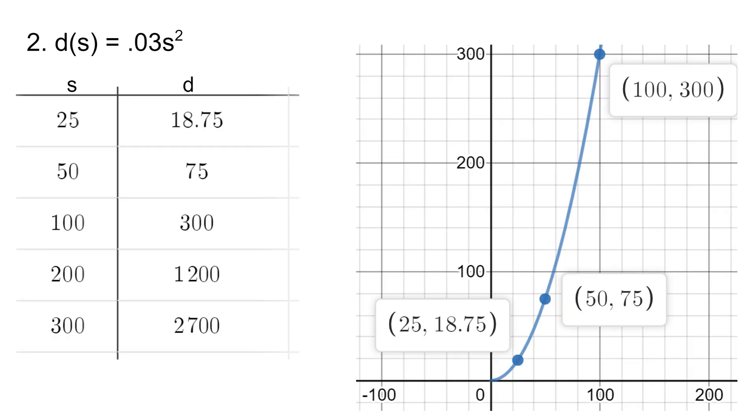So we're given in problem two this function rule for a Ferrari that gives us the stopping distance when we slam the brakes based on the speed of the car. As you can see in my table, if I was driving at a speed of 25 miles per hour, it would take me 18.75 feet to stop because our speeds are in miles per hour and our distances here in this function are in feet.